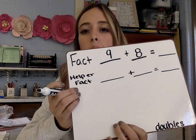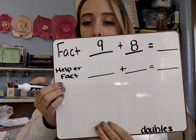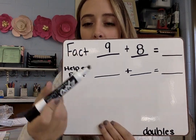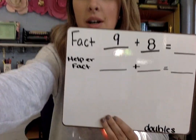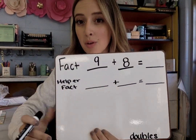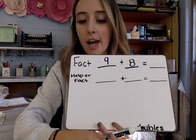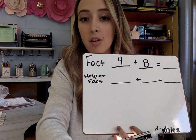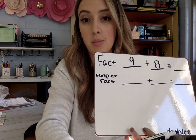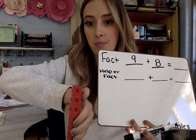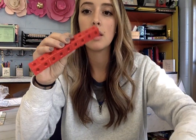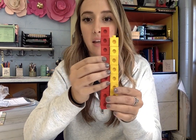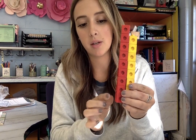So let's do 9 plus 8 first. Our first fact is 9 plus 8. Now, I know that's pretty close to a double. I know that I could either double 9 or I could double 8. I have my two towers here. This one has 9 and this has 8. Count them with me, please.